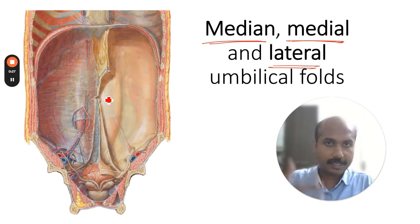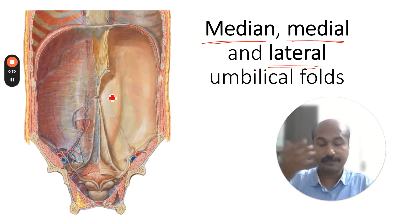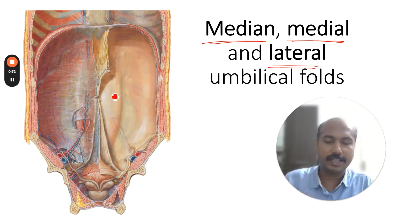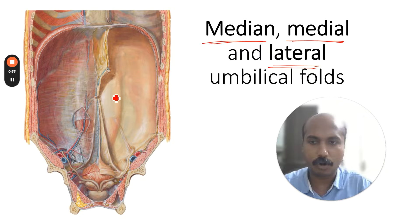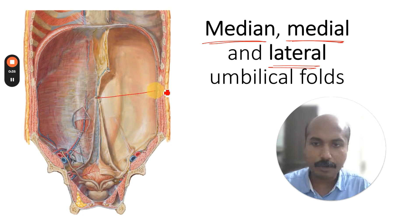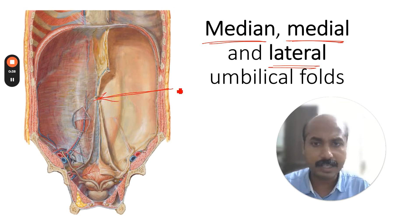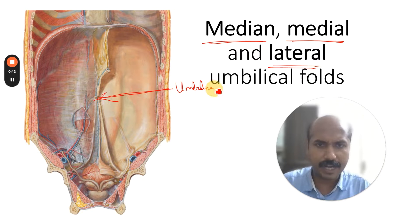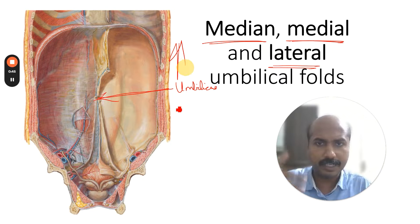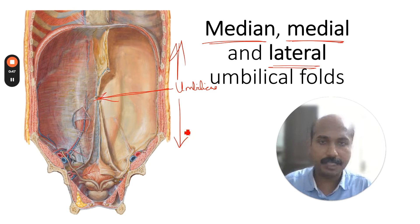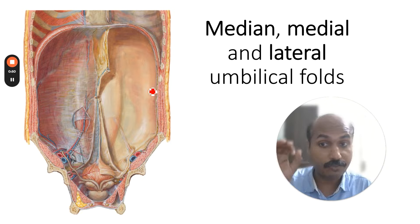You are looking at the anterior abdominal wall from behind — that is, from within your abdomen. A very important landmark is the umbilicus, which divides the anterior abdominal wall into a supra-umbilical region above and an infra-umbilical region below.